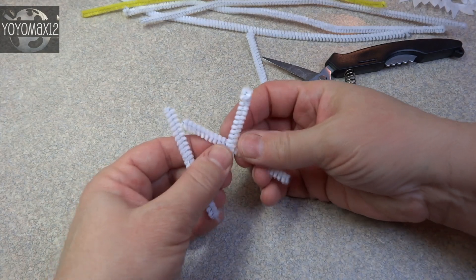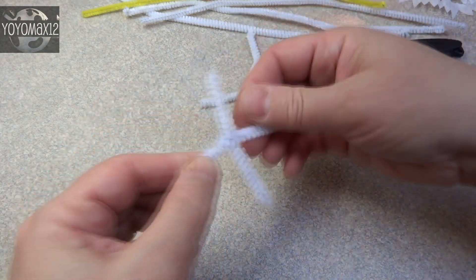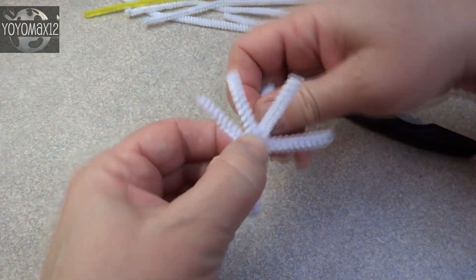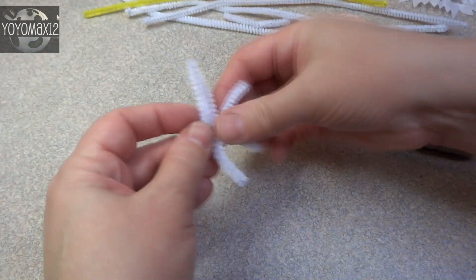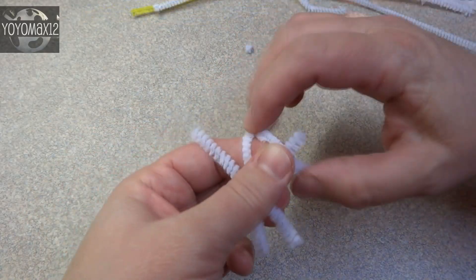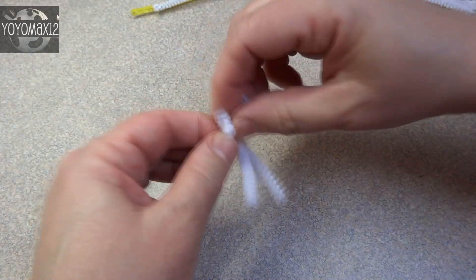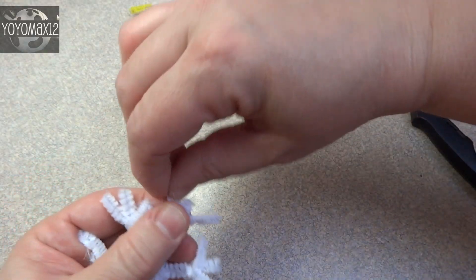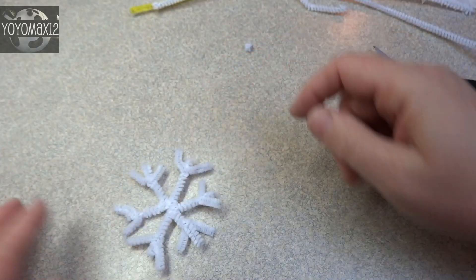Now for those other shapes for the tree ornaments, I used chenille stems or pipe cleaners, as we call them here. And I twisted three white ones together and then added a separate little piece on the end of each of the little rays of that star kind of going outwards to make it look like a snowflake.